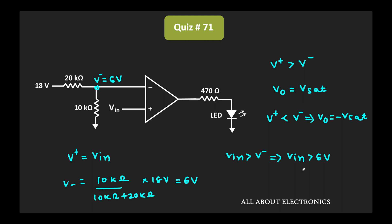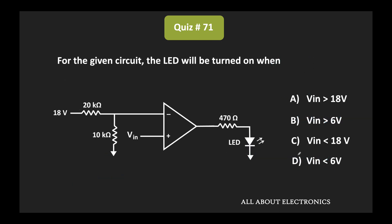So we can say that for the given circuit, the LED will get turned on whenever the input voltage is greater than 6 volt, and hence for the given question, option B is the correct answer.